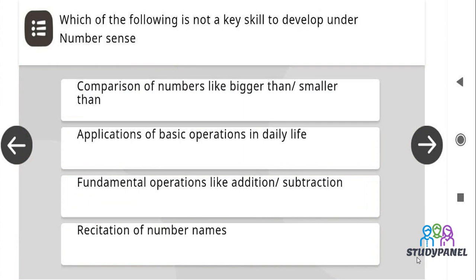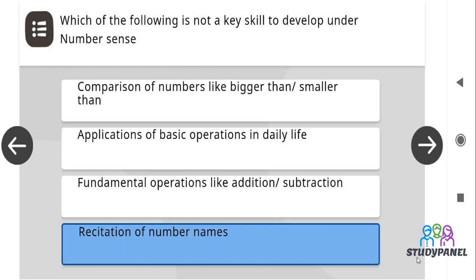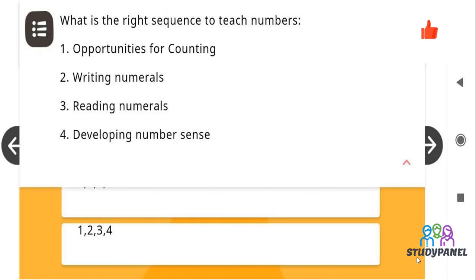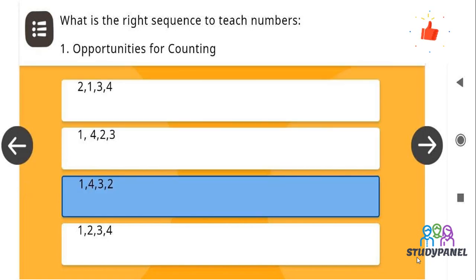Which of the following is not a key skill to develop under number sense? The correct answer is recitation of number names. What is the right sequence to teach numbers? First opportunities for counting, second writing numerals, third reading numerals, fourth developing number sense. And the correct answer is the correct order is 1432.